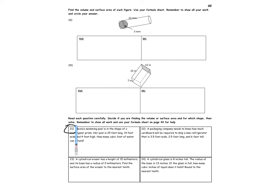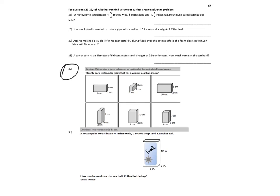So on page 44, look at number 21. Alexia's swimming pool is in the shape of a rectangular prism. Her pool is 25 feet long, 14 feet wide, and 4 feet high. How many cubic feet? So when you see that cubic feet, that's a big clue that you're finding the volume. Because remember, volume is power 3, or it's cubed. So you multiply 25 times 14 times 4 for the final answer there. So on page 45, try number 29. Identify each rectangular prism that has a volume less than 75 cubic centimeters. Then check yourself with me. All right, so check and make sure that you got this one right. Then move on to the next page.